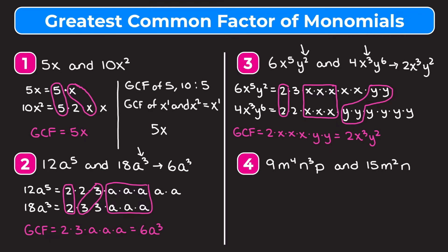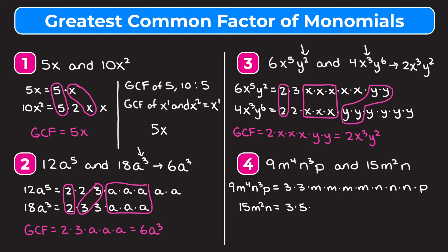Example 4: let's write out each term as a product of its factors. 9 is 3 times 3, m to the fourth is four m's, n cubed is three n's, and p is just p. For 15m squared n: 15 is 3 times 5, m squared is m times m, and n is just itself. Circling what they have in common: one 3, two m's, and one n.